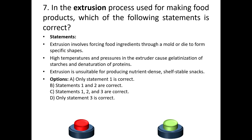Seventh question: in the extrusion process used for making food products, which of the following statements is correct? Statement one: Extrusion involves forcing food ingredients through a mold or die to form a specific shape. Statement two: High temperatures and pressures in the extruder cause gelatinization of starches and denaturation of proteins. Statement three: Extrusion is unsuitable for producing nutrient-dense or shelf-stable snacks.